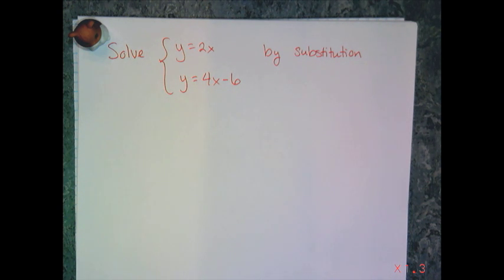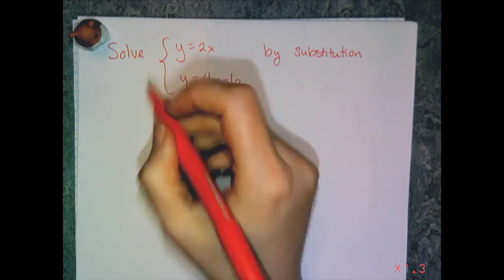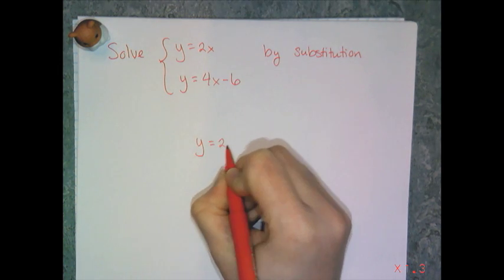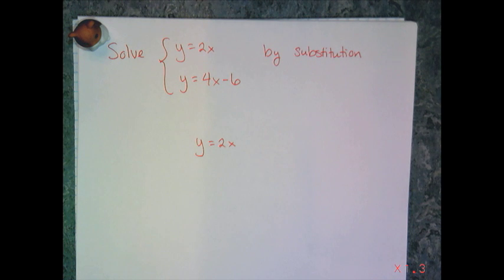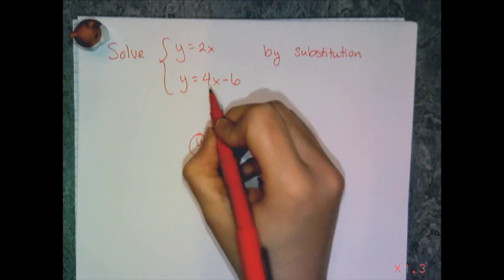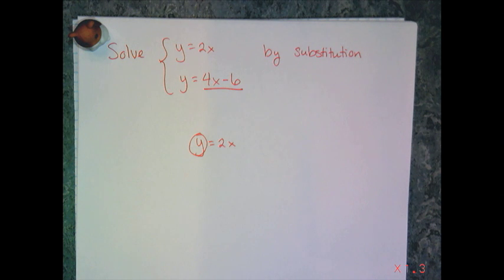So I look at the first equation, I have y equals 2x. So I take y equals 2x and I am going to substitute in this y for something that it's equal to. Now the other equation tells me what it's equal to. It tells me that it's equal to 4x minus 6.